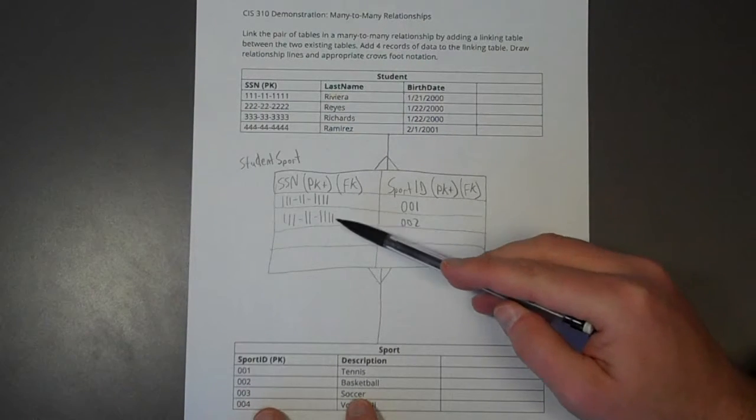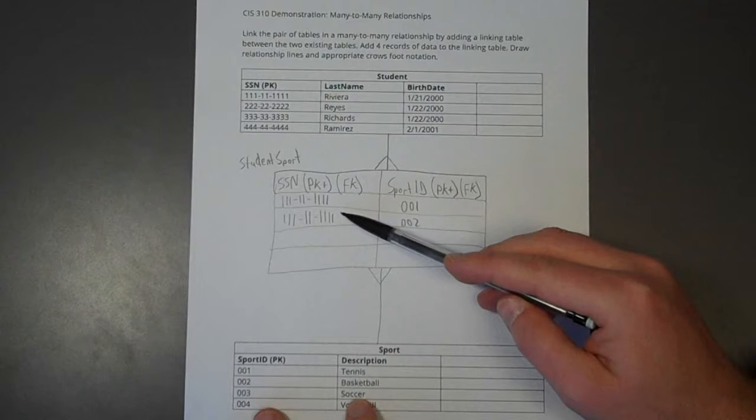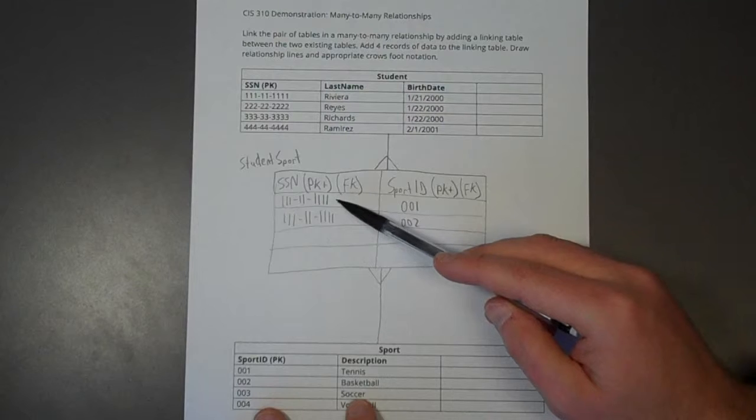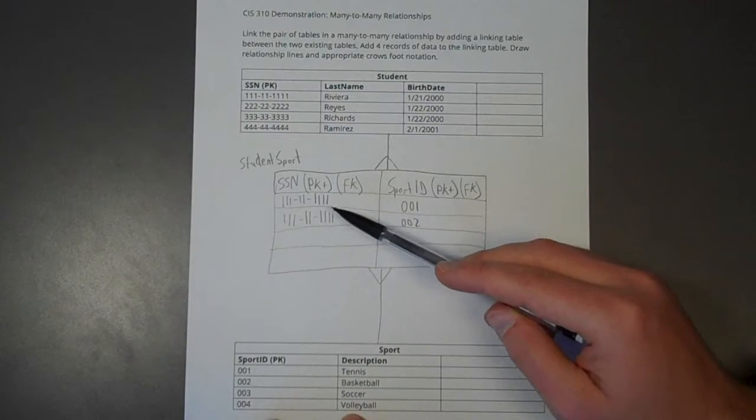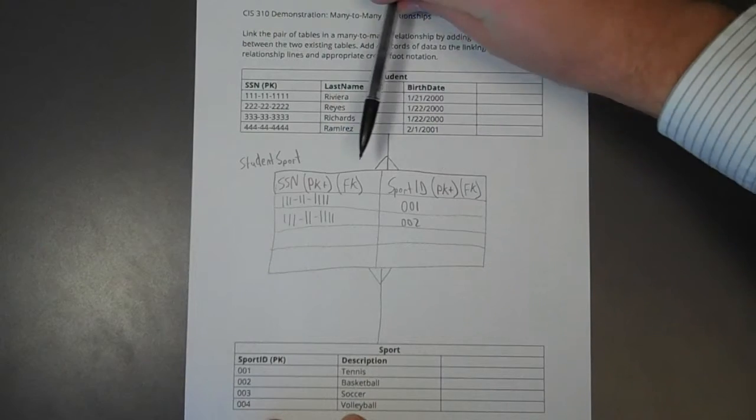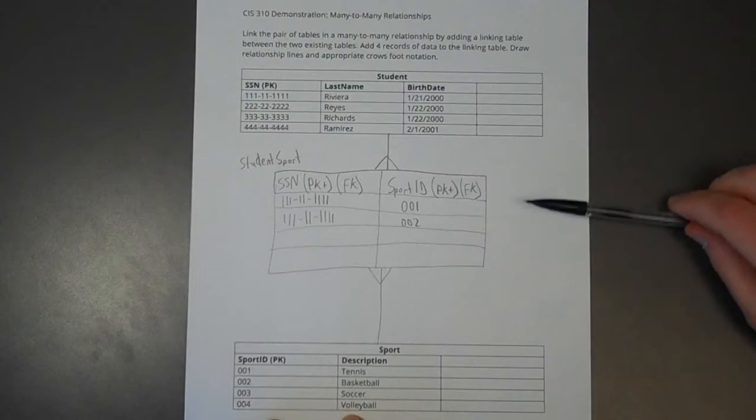Now we have a duplicate here. And that's okay because this is a member of a composite key. If this were the primary key, we'd have an issue. We'd have an issue because we'd have a duplicate. But remember, the combination of this column and this column is going to uniquely identify every row.